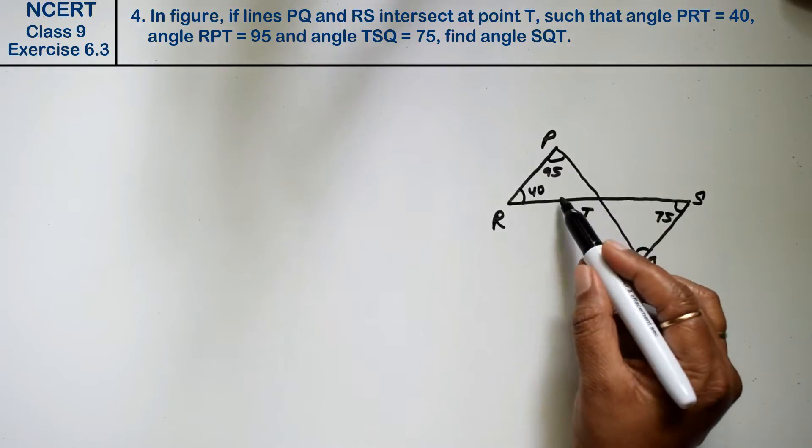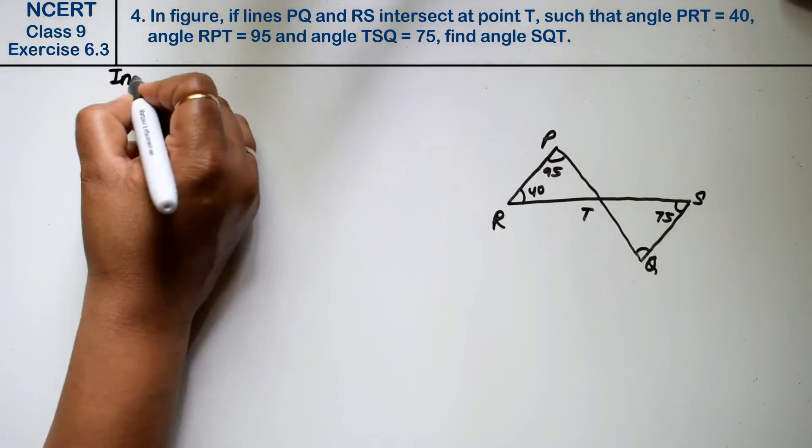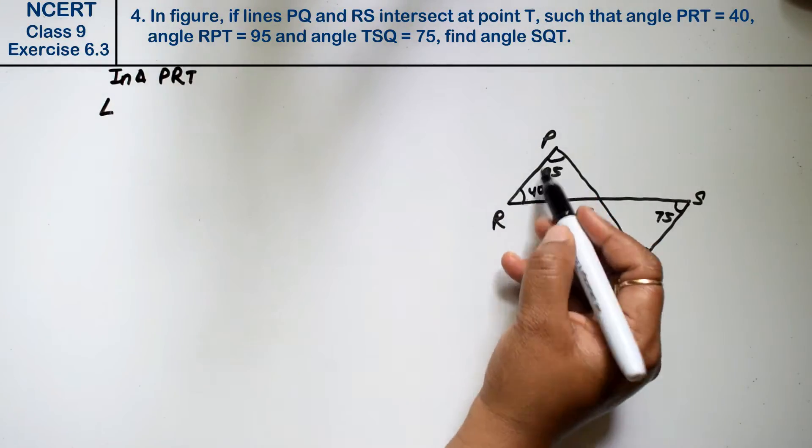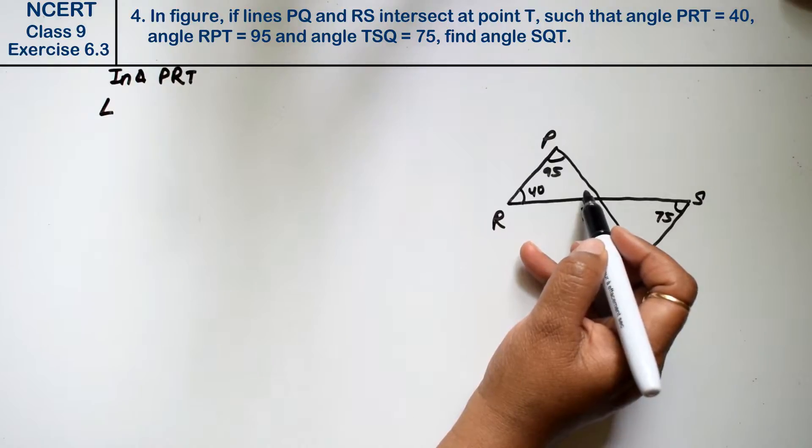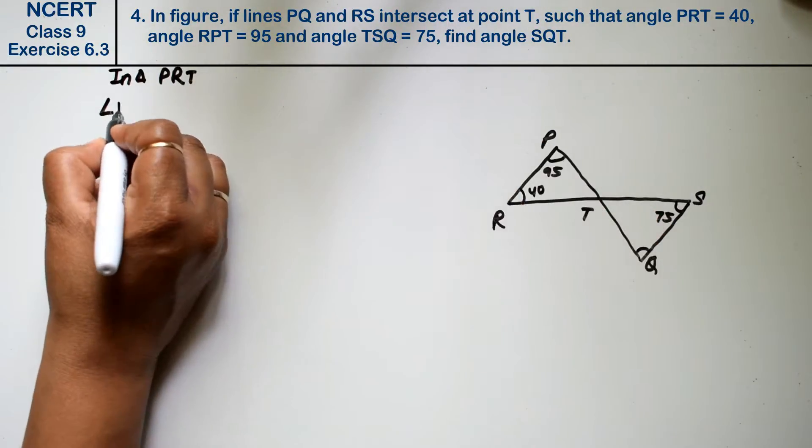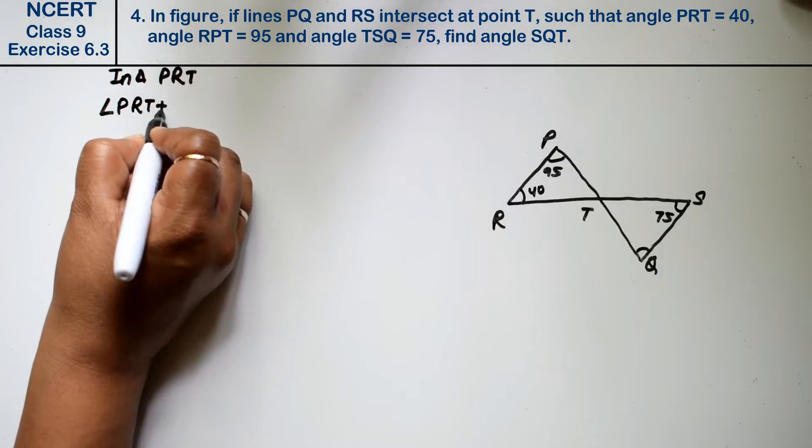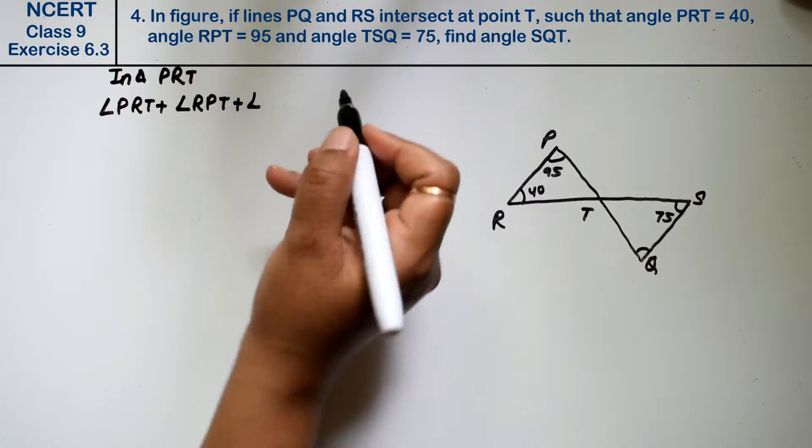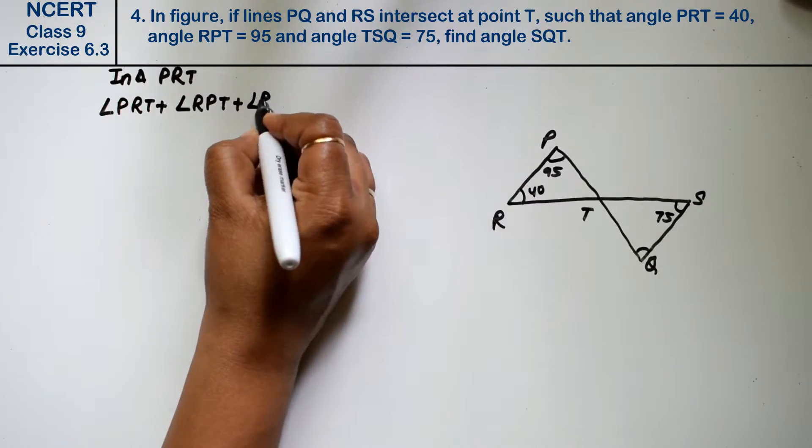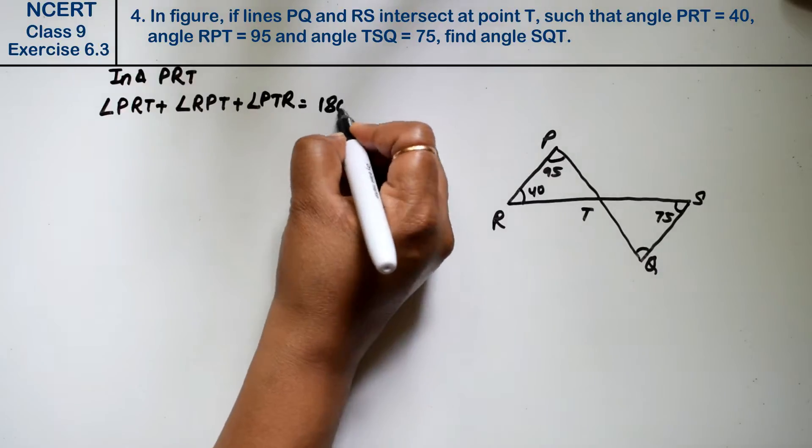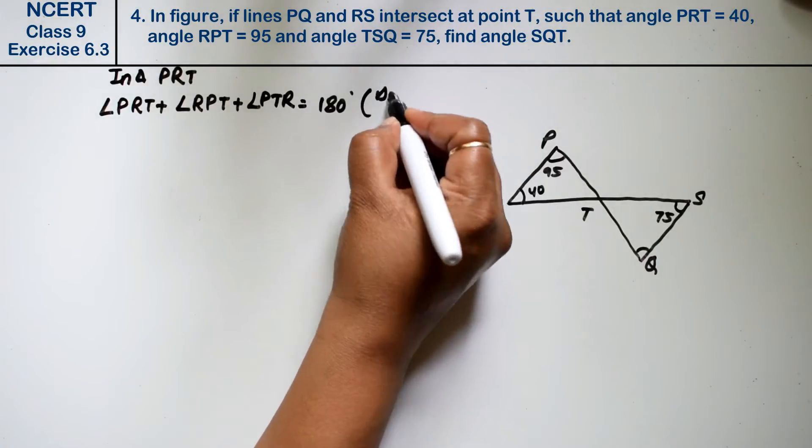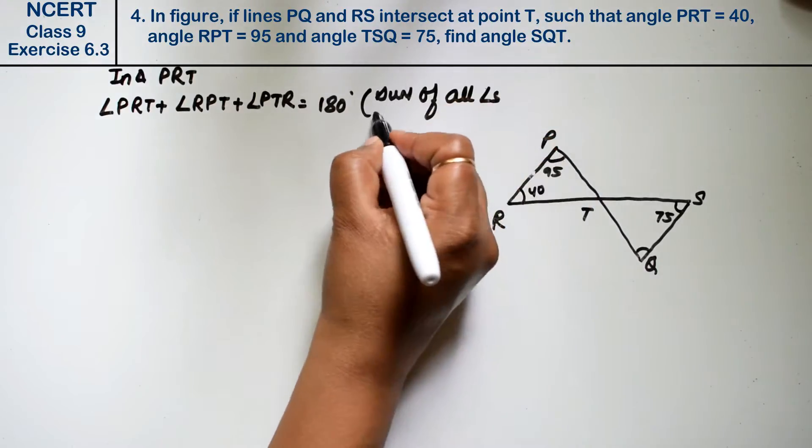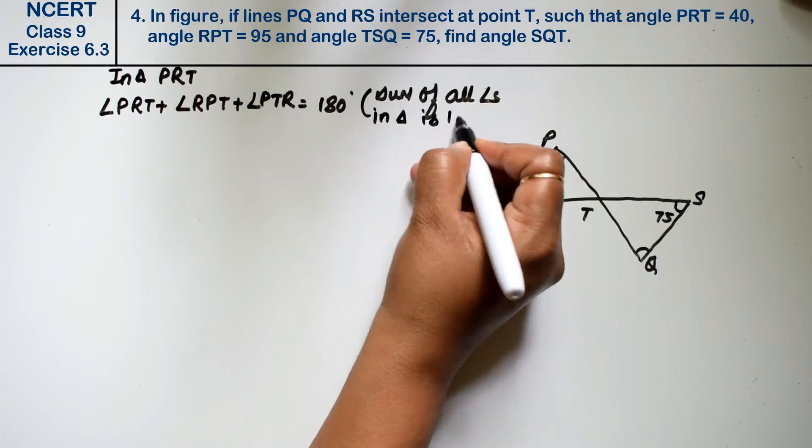How do we solve this triangle? In triangle PRT, we should have 3 angles equal to 180 degrees. So which angles do we have? Angle PRT plus angle RPT plus angle PTR equals 180 degrees. Why? Because sum of all angles in a triangle is 180.